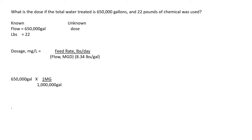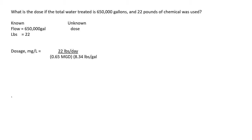To convert 650,000 gallons to MGD, divide by one million gallons — since there is a million gallons in 1 MGD. The gallons cancel out and you get 0.65 MGD. Now plugging into the formula: 22 pounds per day divided by 0.65 MGD times 8.34 pounds per gallon. Multiplying the bottom gives 5.421. Then 22 divided by 5.421 gives a dosage of 4.06 milligrams per liter.